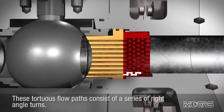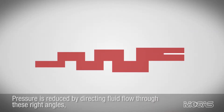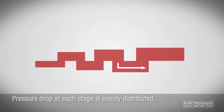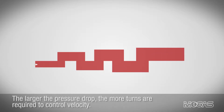These tortuous flow paths consist of a series of right angle turns. Pressure is reduced by directing fluid flow through these right angles, which control kinetic energy and velocity. Pressure drop at each stage is evenly distributed, while the tortuous path expands at each right angle to ensure velocities will not be increased. The larger the pressure drop, the more turns are required to control velocity.